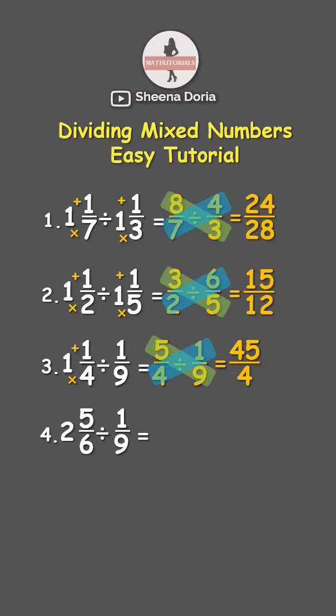Here we can see that our answer can still be simplified to its lowest term. Comment for 2 if you want to know its simplified form. But for now, it's your turn. What is 2 and 5 sixths divided by 1 ninth? Comment your answer.